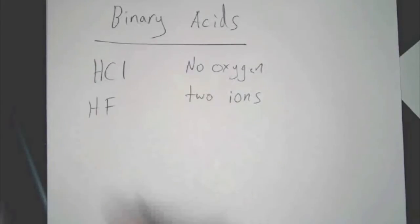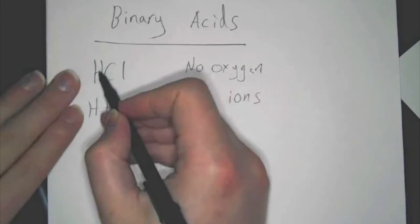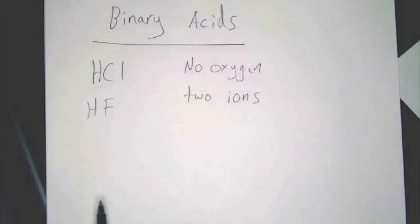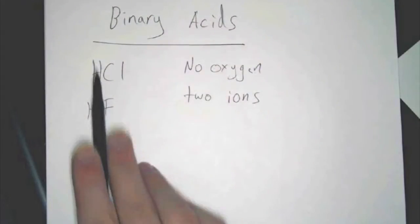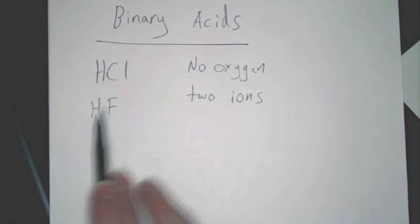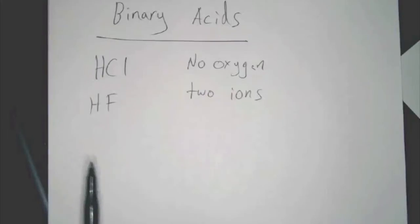Those are the keys. And if you look at these, you see that there's an H, there's a Cl. That's no oxygen, and it's two ions. A positive ion and a negative ion. So, as far as writing this out, it's very straightforward and simple. Like, it's really simple.